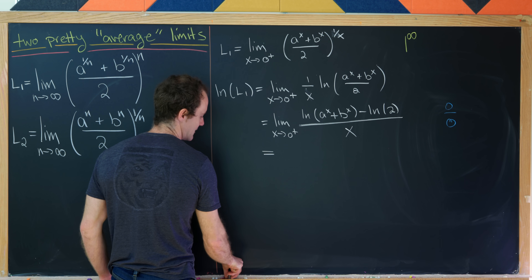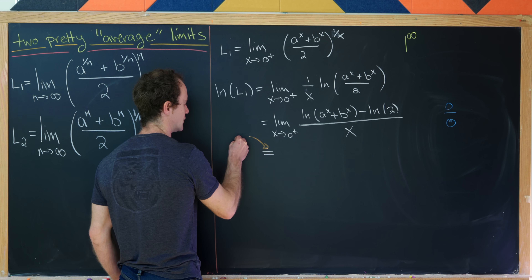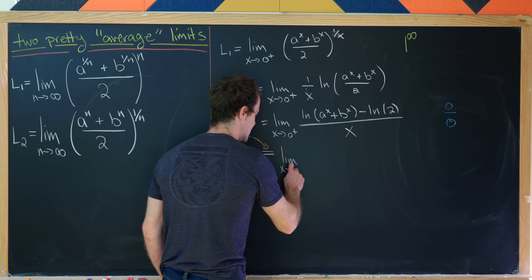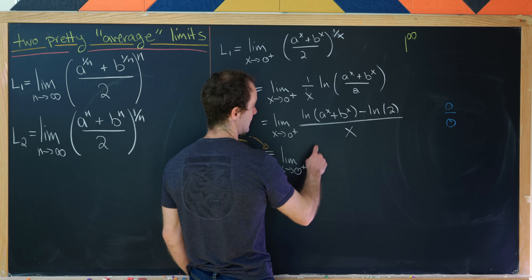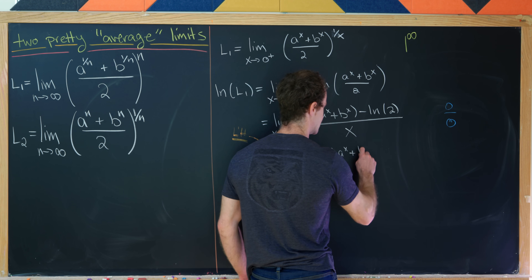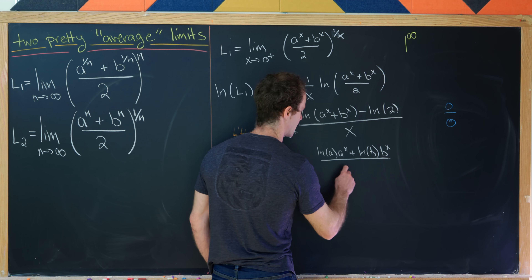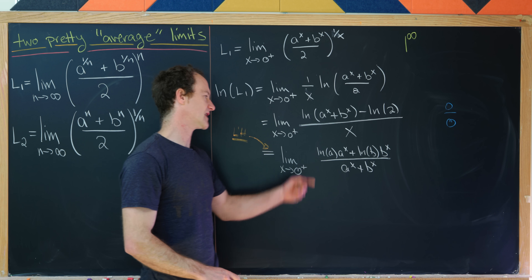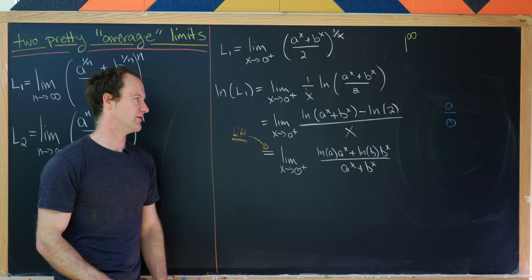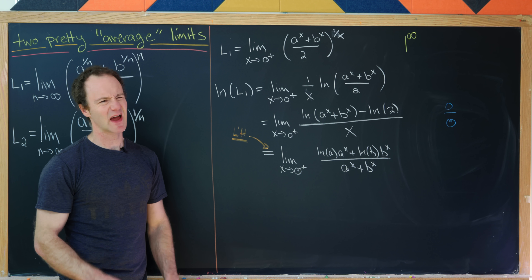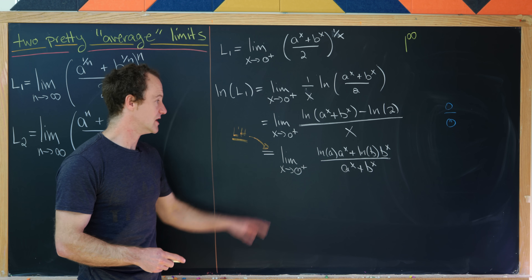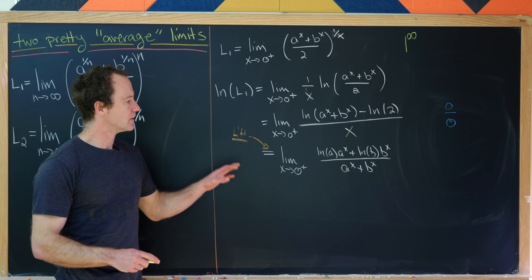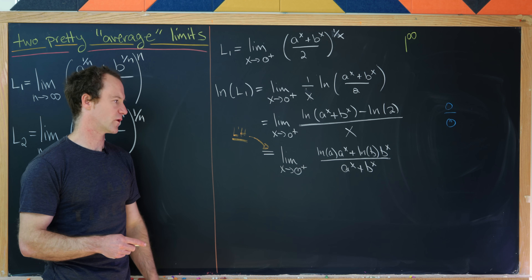This limit equals the limit determined by taking the derivative of the numerator and the denominator. We get the limit as x goes to 0 from above of [ln(a)·a^x + ln(b)·b^x] all over [a^x + b^x]. The derivative of the numerator comes from the fact that when we take the derivative of a^x, a natural log of a pops out. It's worth noting here that we need a and b to be positive real numbers; otherwise these calculations don't make sense. The denominator follows from the derivative rule for the natural log.